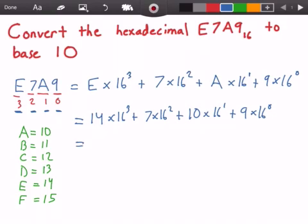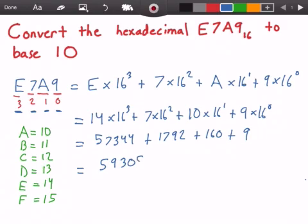If I'm doing my math correctly, this equals 57,344 plus 1,792 plus 160 plus 9. If I add all that up, I get 59,305 in base 10. That is our answer: the number E7A9 in hexadecimal is 59,305 in base 10.